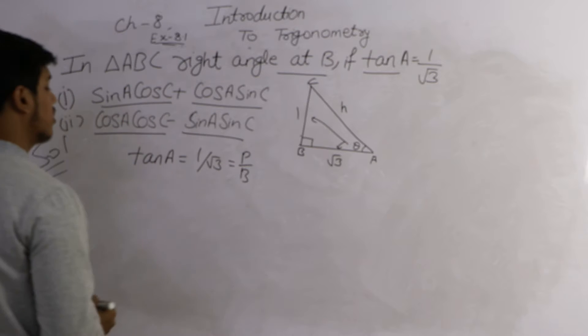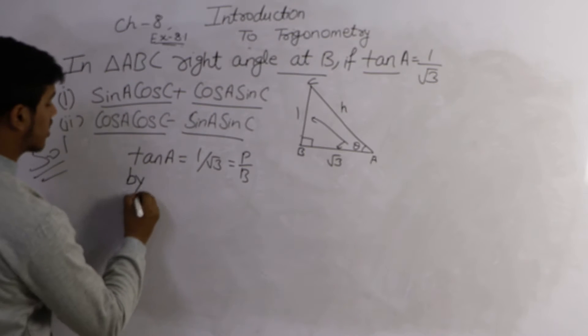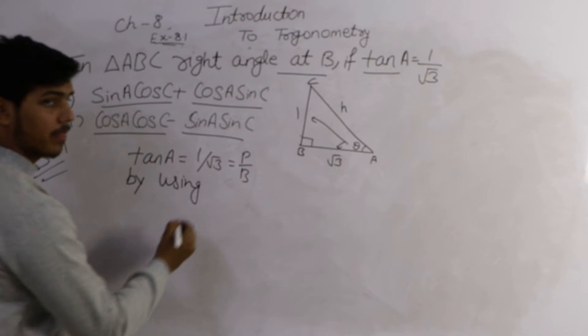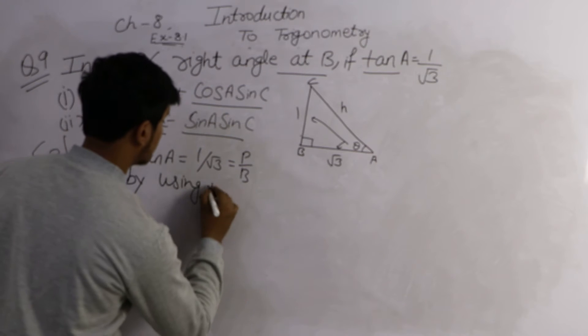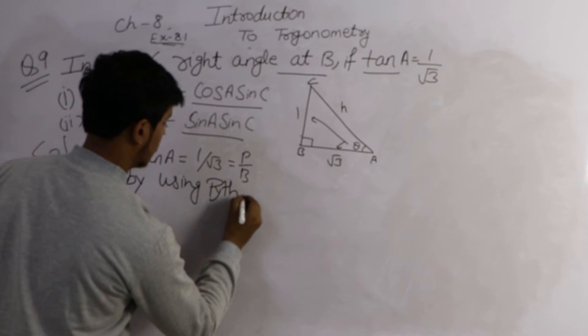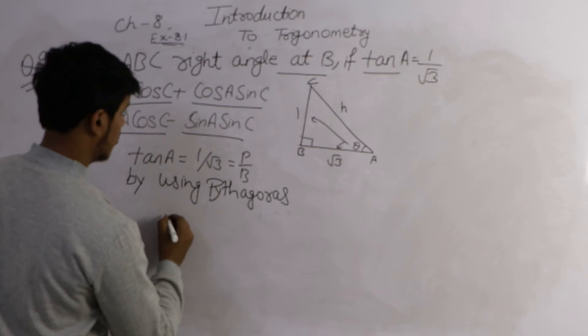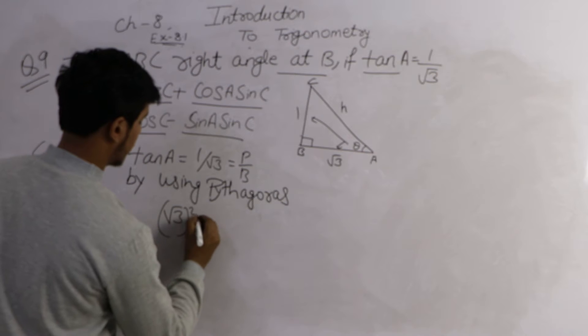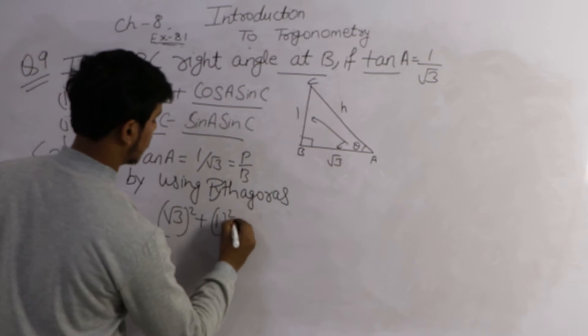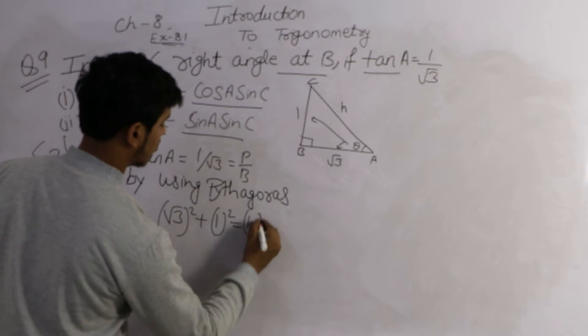We have to calculate the hypotenuse by using Pythagoras. By using Pythagoras, base square plus perpendicular square is equal to hypotenuse square.